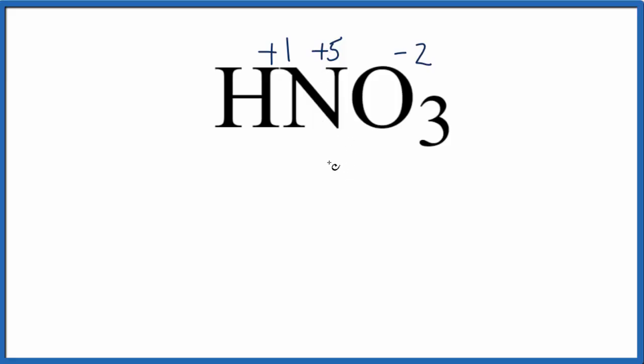You can figure this out algebraically too, pretty easily. You have a plus 1 for the hydrogen, we're trying to find the nitrogen, we'll call that X, and then oxygen, that's minus 2, but we have three of them, so we'll multiply that by 3, and that'll equal zero.